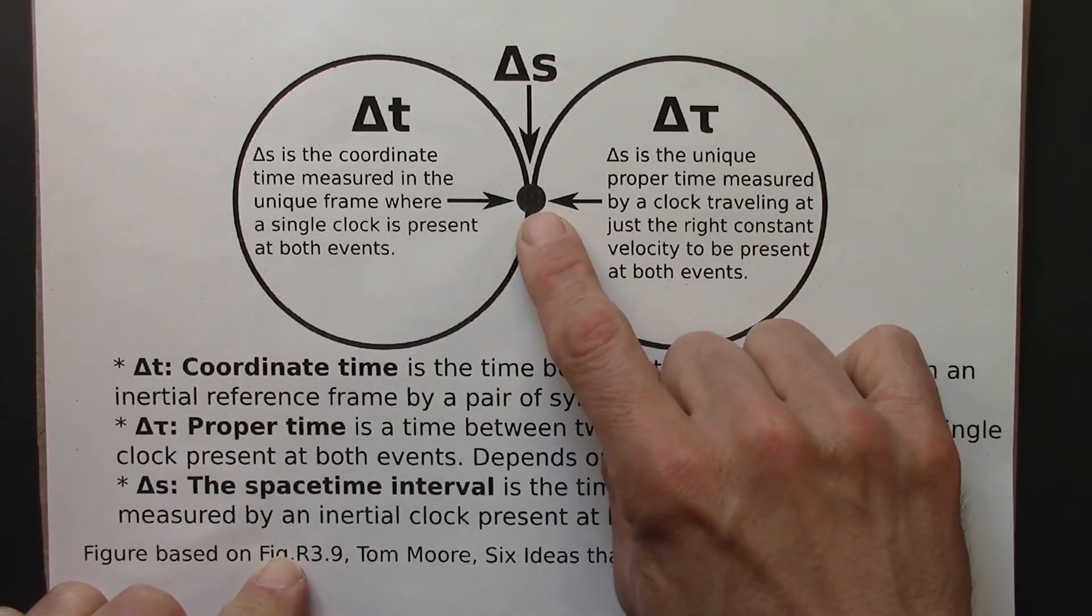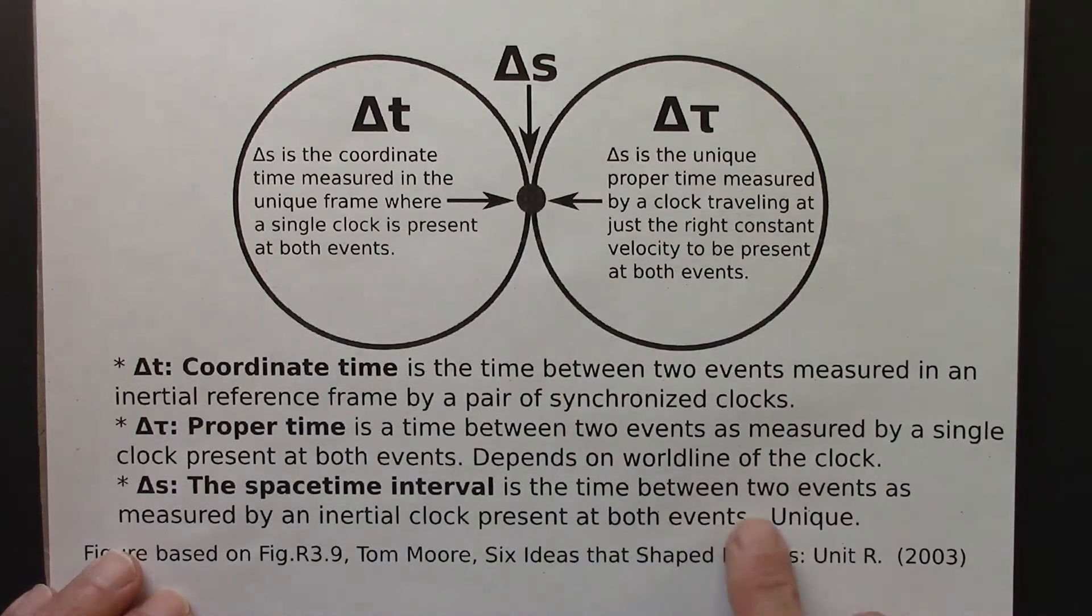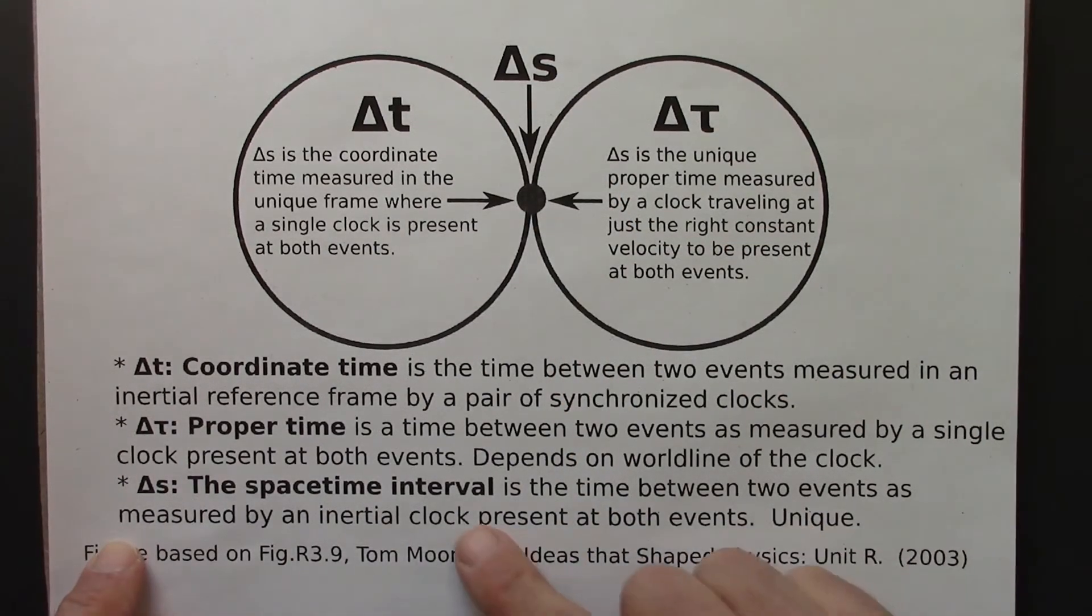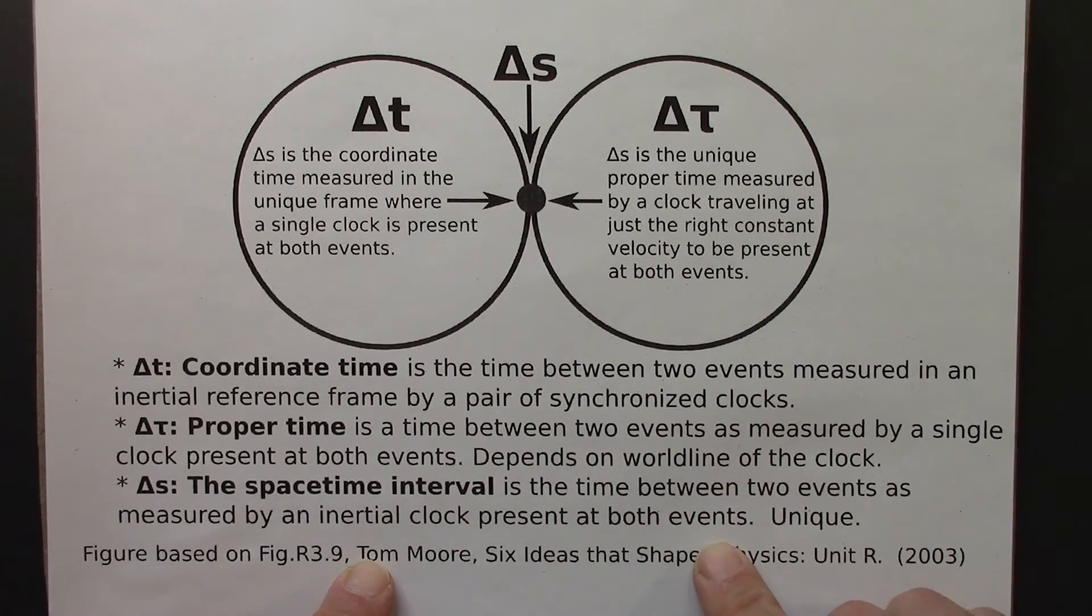So in that case, we've measured the spacetime interval, delta s. That's the definition of the spacetime interval. It's a time between two events as measured by an inertial, i.e. constant velocity, clock, present at both events.